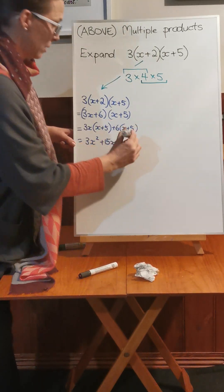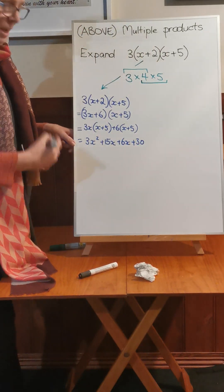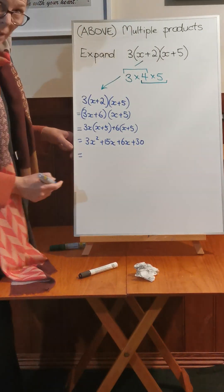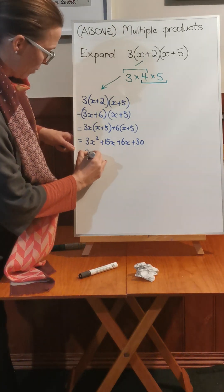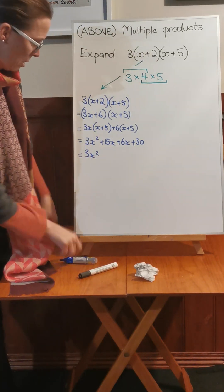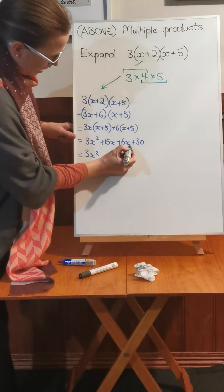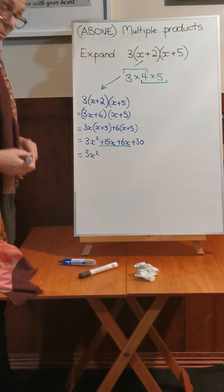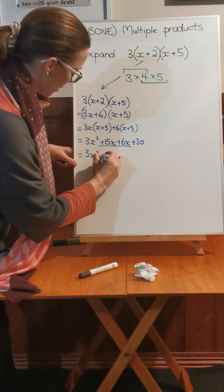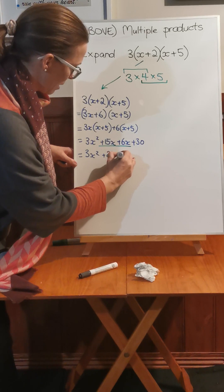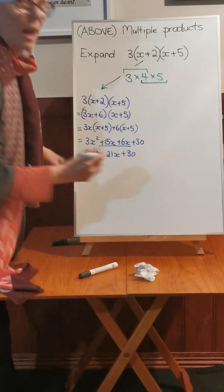Our final step is just to simplify that. So 3x squared, collect the like terms. So we have 21x and adding 30.